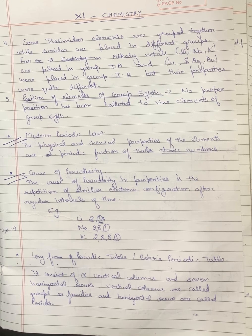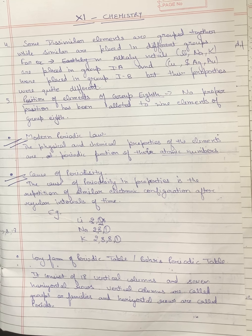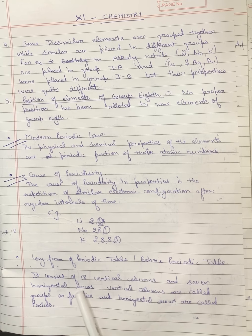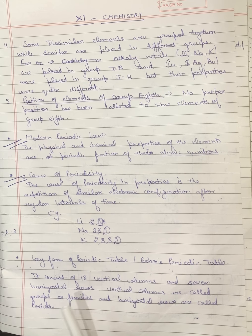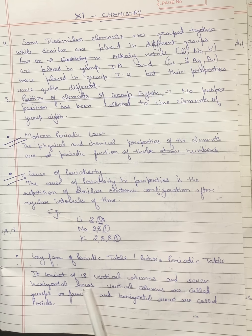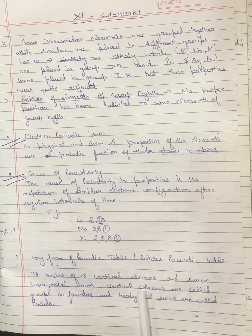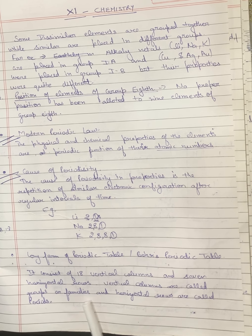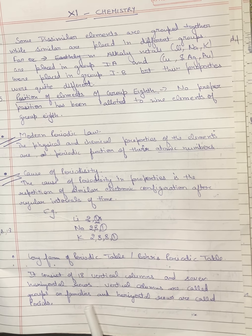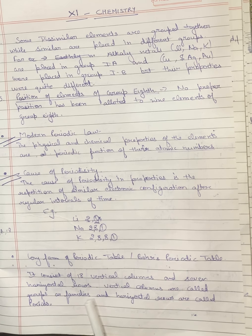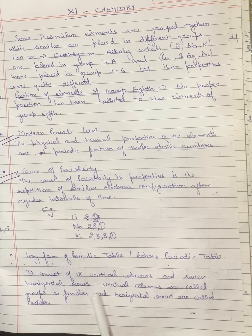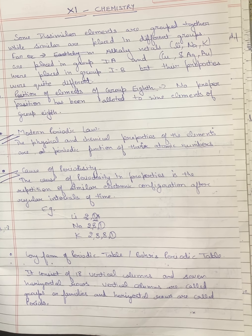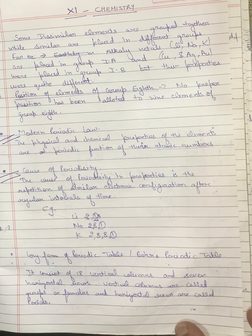In the long form of the periodic table, also known as Bohr's periodic table, there are eighteen vertical columns which we call groups, and seven horizontal rows which we call periods.